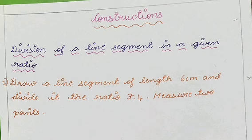First question. Draw a line segment of length 6 cm and divide it in the ratio 3 is to 4. Measure the two parts.